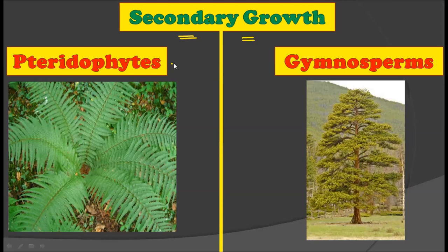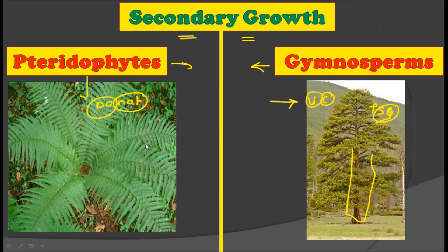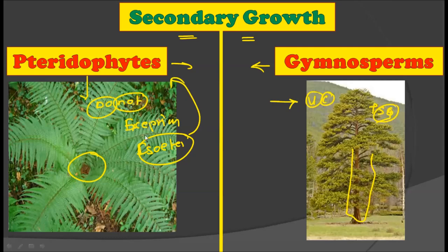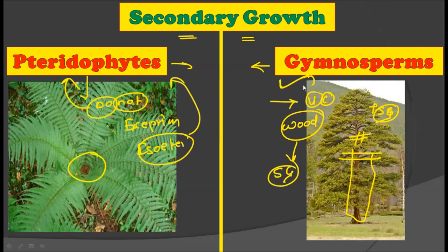From the secondary growth point of view, pteridophytes do not show any secondary growth, while gymnosperms show secondary growth due to their vascular cambium activity. There are exceptions such as Isoetes, which shows some degree of secondary growth, but generally pteridophytes do not show secondary growth. Gymnosperms are quite famous for their secondary growth because their wood is commercially very important.